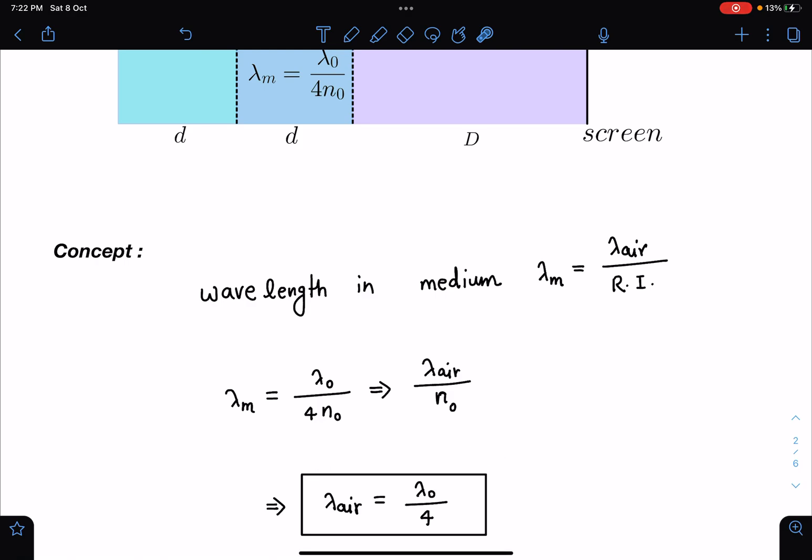So sometime students make mistake when they take lambda air as lambda 0 because we are habitual of taking as lambda 0. The same thing happened in the class when I gave a changed medium in a different problem. So many students made mistake in that part. So just be careful, the lambda air is lambda 0 by 4 and not lambda 0.